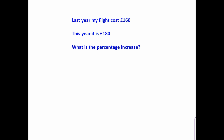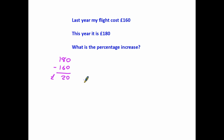This is the first example. It's a situation where something has gone up in price, so we're looking for a percentage increase. Last year my flight cost £160 and this year it's £180. The question is: what is the percentage increase? The first thing we need to do is work out the actual financial increase. It was £160, it's now £180, so if we take the old price from the new, we can see that we have an increase of £20.